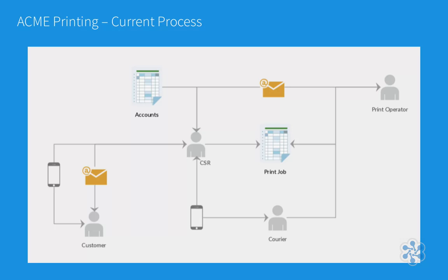If the customer has an account and the billing information on file is out of date, the CSR will reach out to the customer by phone or email in order to update the billing information. Assuming the account has no outstanding balance, the CSR passes the 3D plans and instructions along to the print operator.